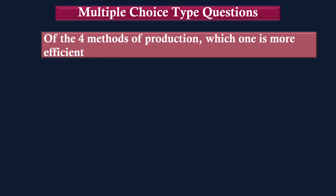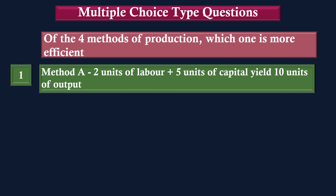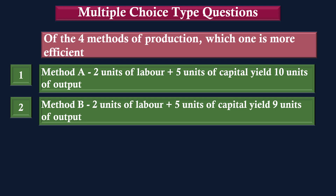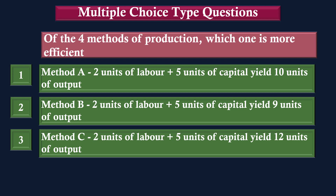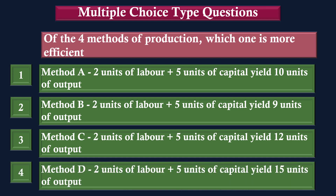Of the four methods of production, which one is more efficient? Method A: two units of labour plus five units of capital yield ten units of output. Method B: two units of labour plus five units of capital yield nine units of output. Method D: two units of labour plus five units of capital yield fifteen units of output. The correct answer is 4, method D.